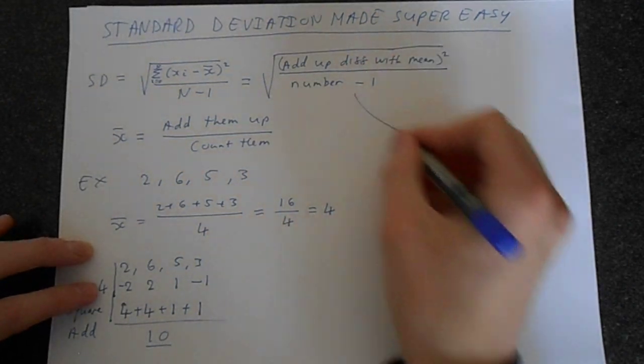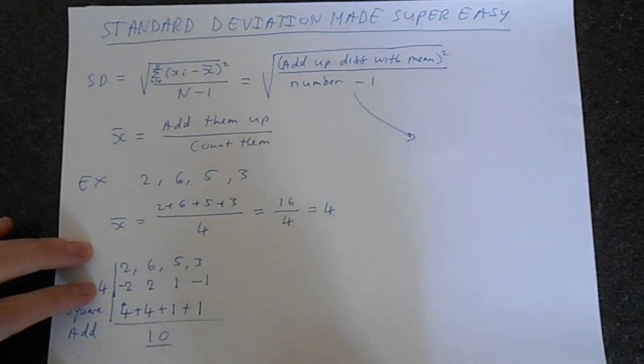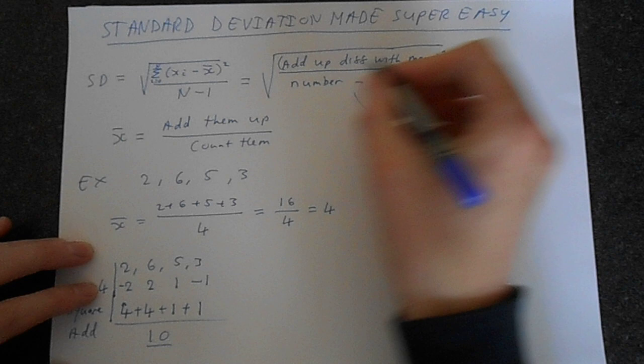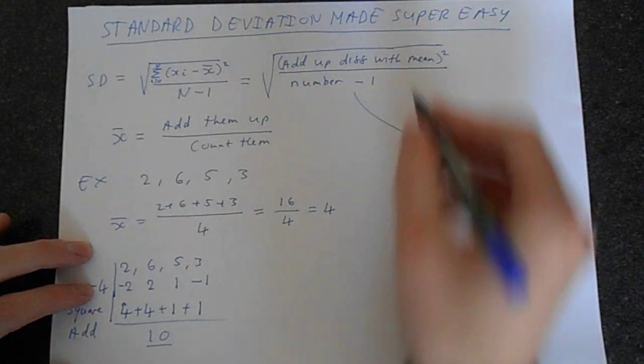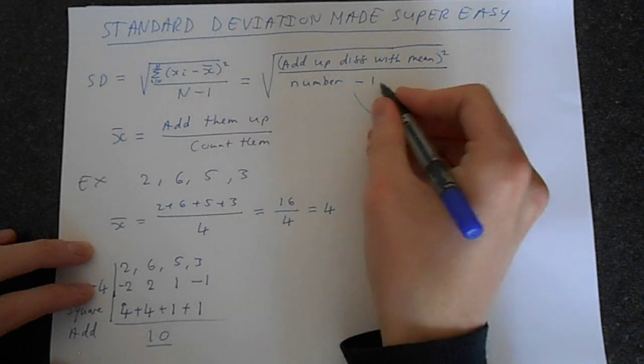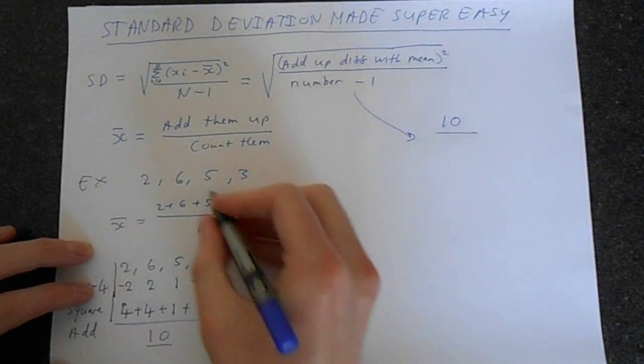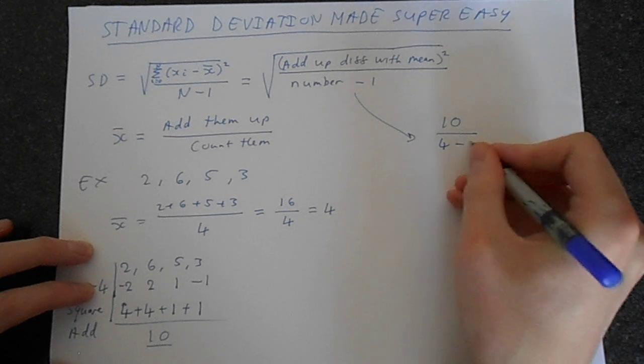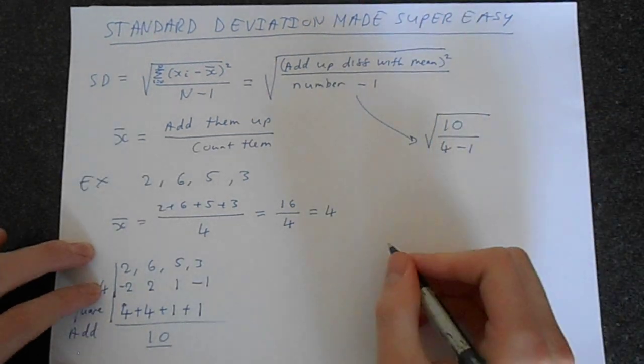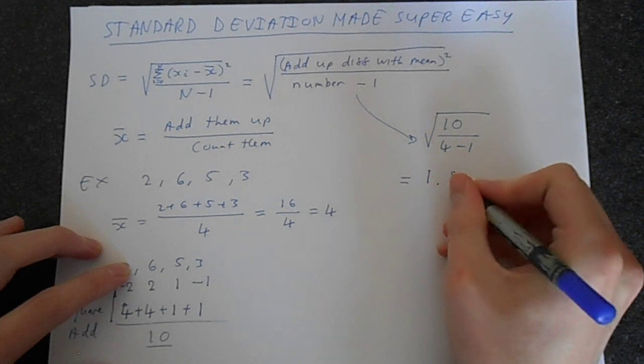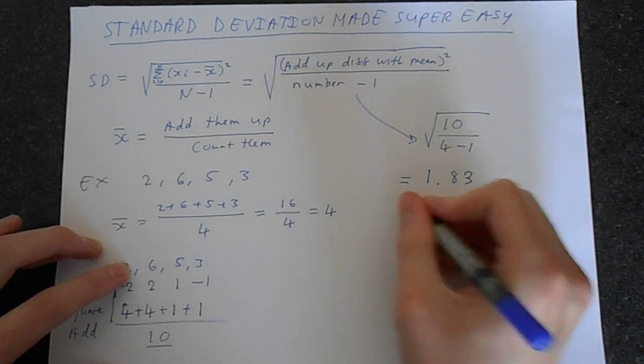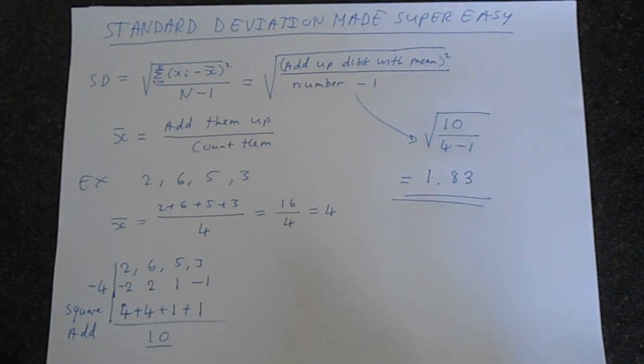So here's our instructions. So let's just fill out these instructions. So we've done this. We've added them up and we've squared them. So 10 can go in that place. The number? Well, 1, 2, 3, 4. Minus 1. So 4 minus 1 square root. And if you do that, you'll get, with rounding, 1.83. And that's the standard deviation done.